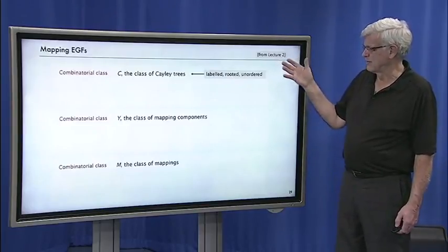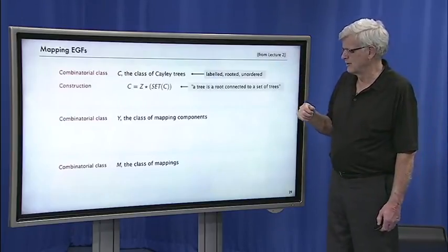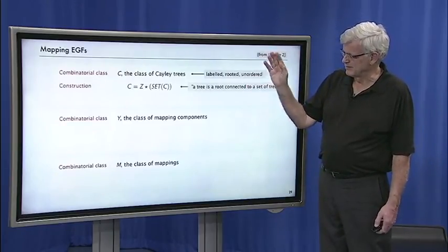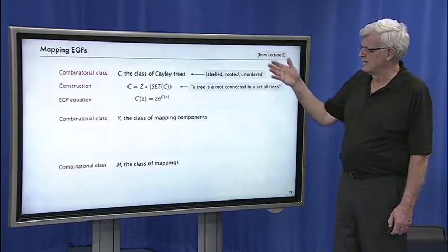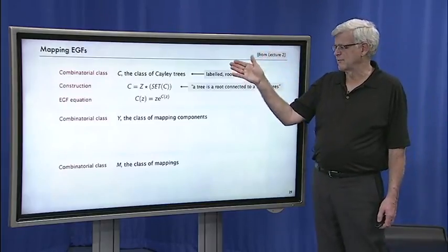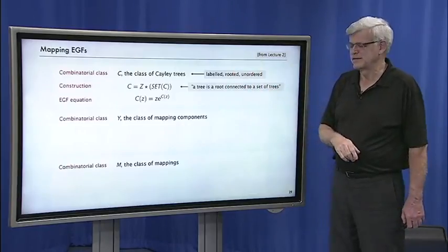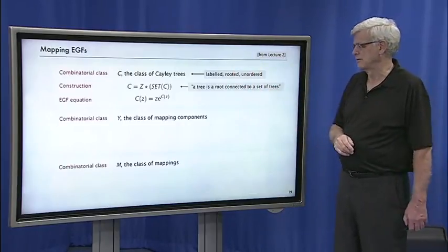And so we looked at this basic setup in lecture two. It starts with trees, Cayley trees, labeled rooted unordered trees. A Cayley tree is a node and a set of trees, a root and a set of trees. And that translates by the symbolic method immediately to C(z) equals e^C(z).